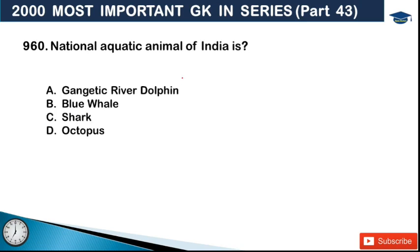Next: the national aquatic animal of India is which of the following? Options are: Gangetic river dolphin, blue whale, shark, and octopus. The answer is option A - the Gangetic river dolphin is our national aquatic animal.